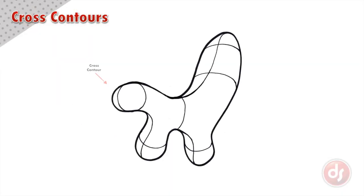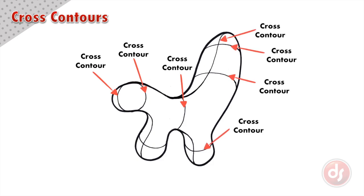A cross contour is a real or imagined line that moves over a surface and describes its underlying form.